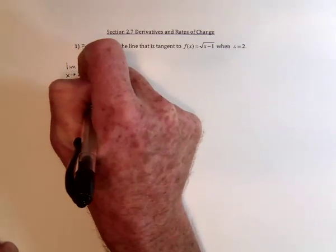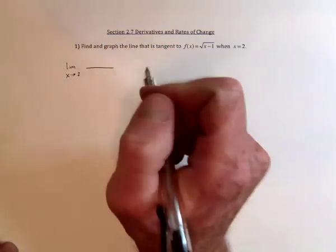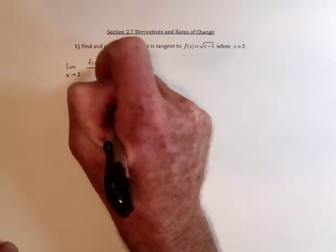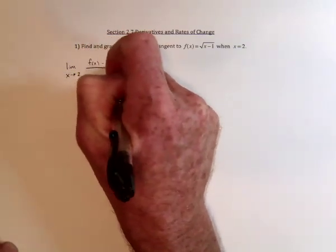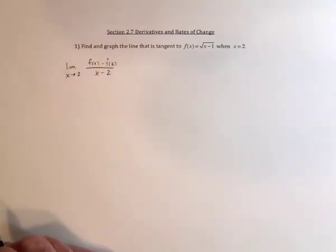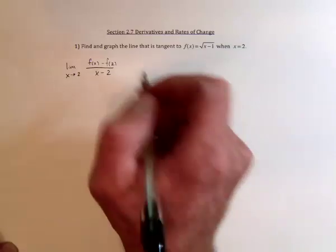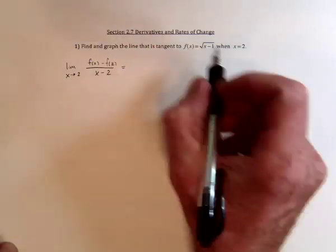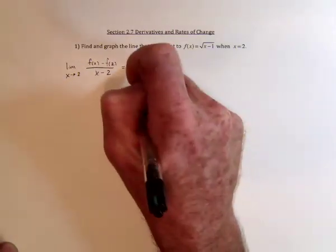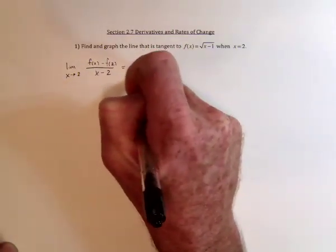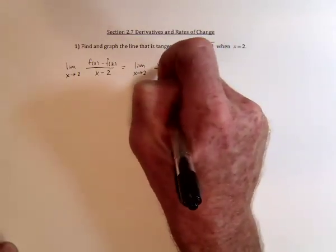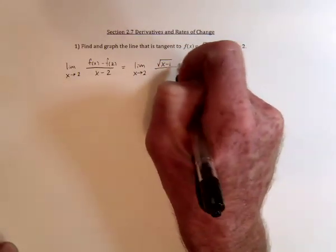Slope is rise over run, so I need to subtract the two y values and then subtract the two x values — that's the rise over run. Now I need to substitute the function, the square root of x minus 1, in here. So we've got the limit as x approaches 2, and we've got the square root of x minus 1 for the function.